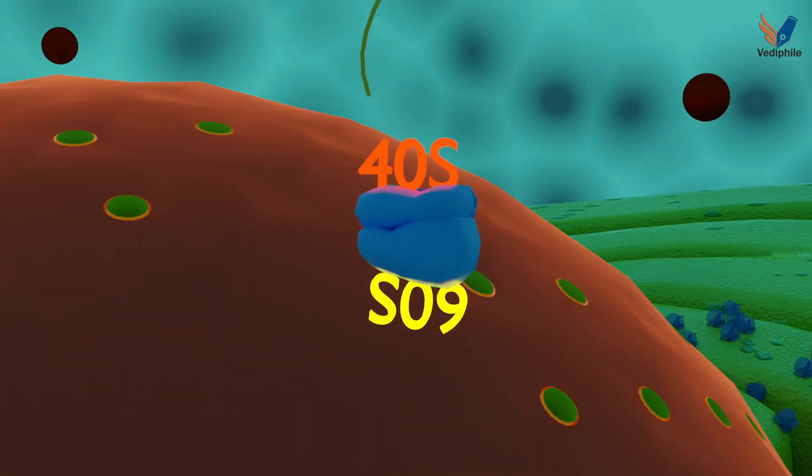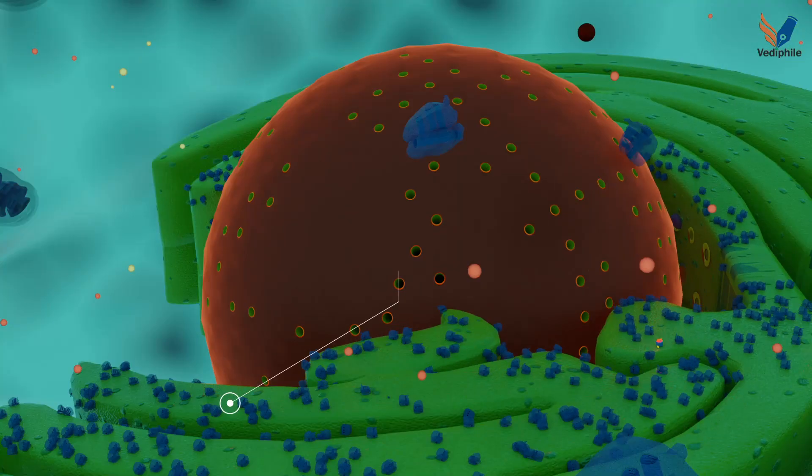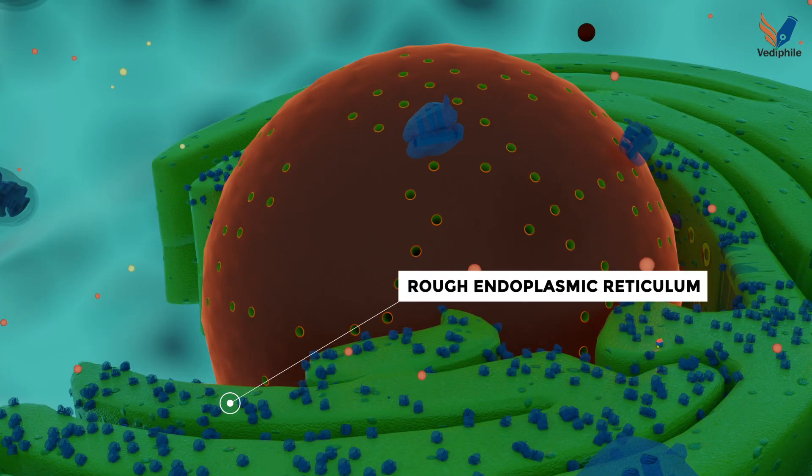Ribosomes come out from the nuclear pore and stick to endoplasmic reticulum. Hence, we call it rough endoplasmic reticulum.